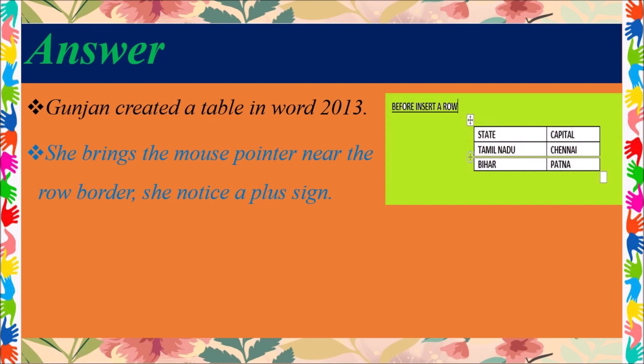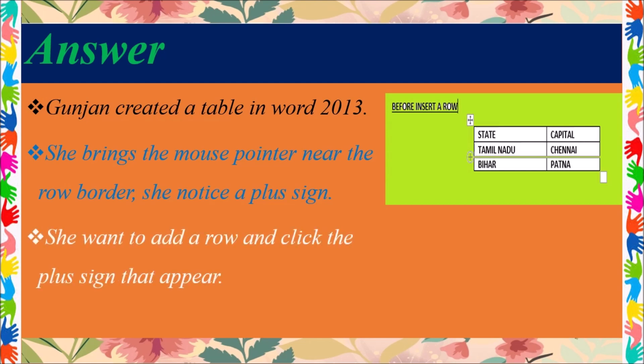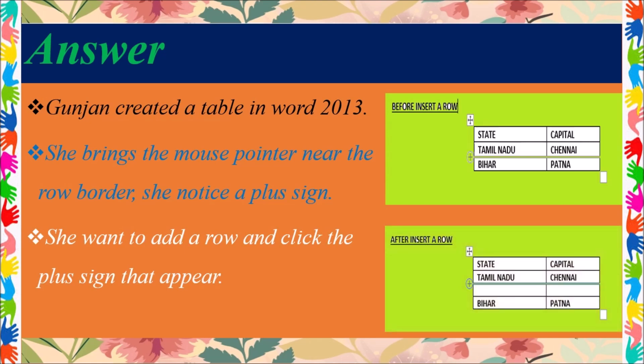She wants to add a row and clicks the plus sign that appears. By clicking the plus sign directly, one more row is added to the table. This image shows the table after inserting the row.